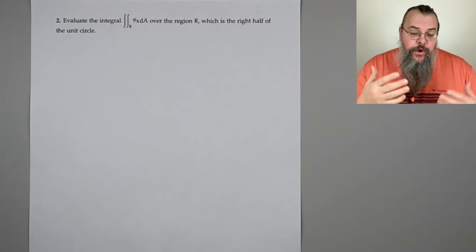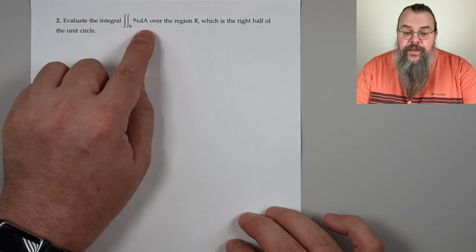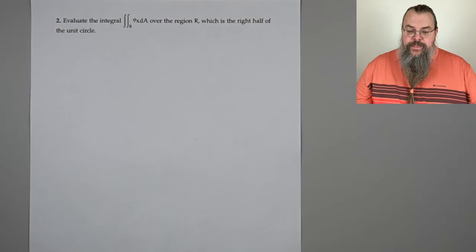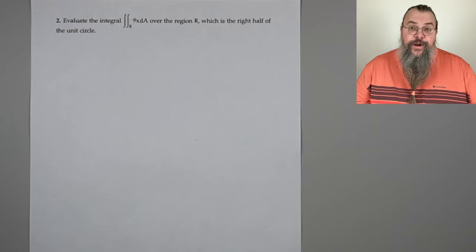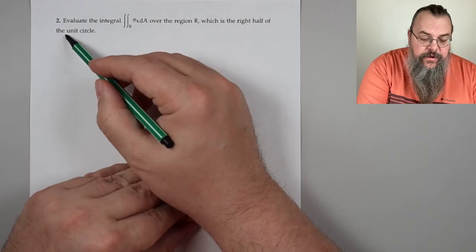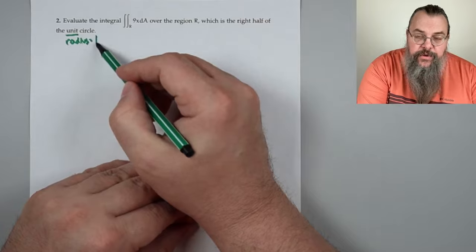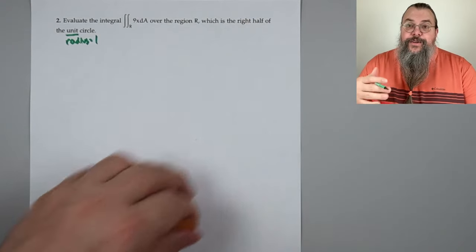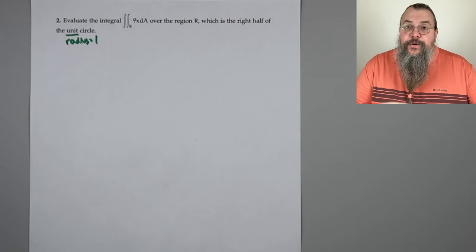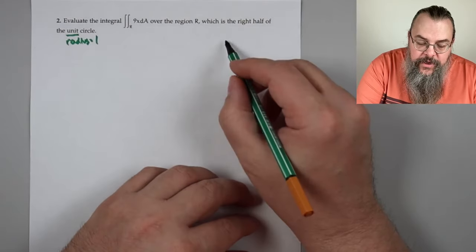Number two: evaluate the integral over region R of 9x dA, where R is the right half of the unit circle. Let's draw our picture. The unit circle has radius 1. We want the right half, so there's our shaded region. We could do this straightforward, but circles suggest using polar coordinates.